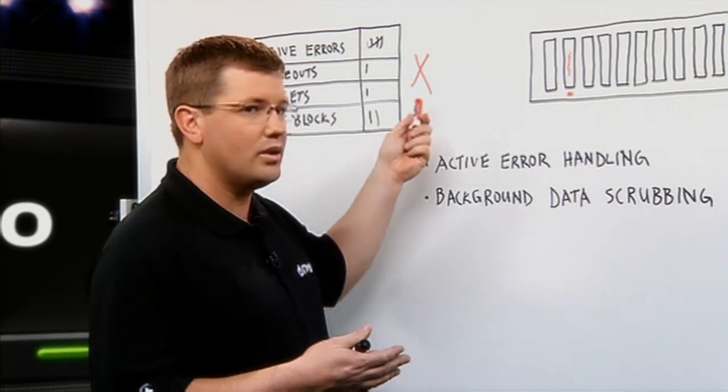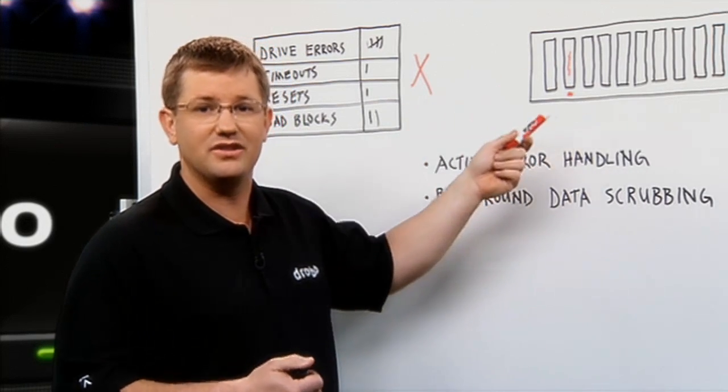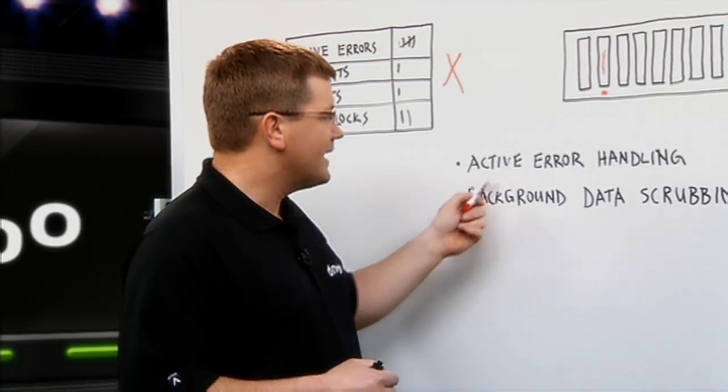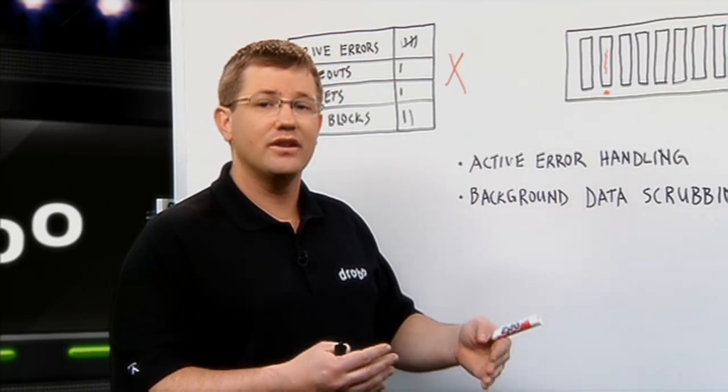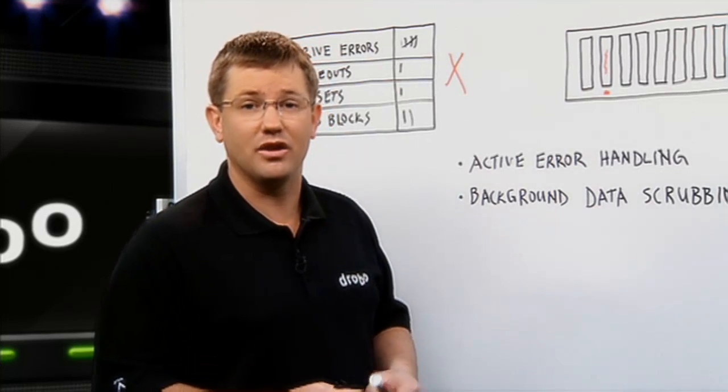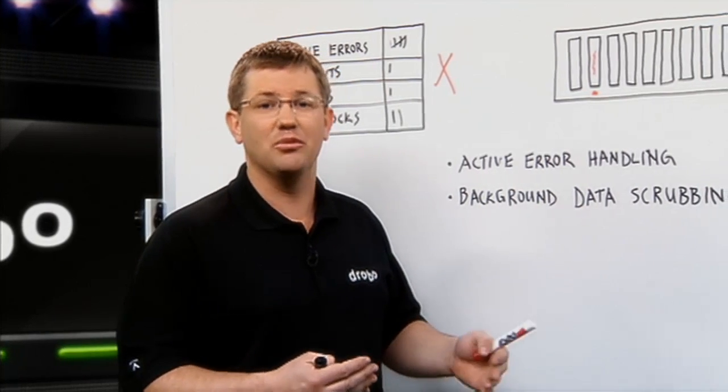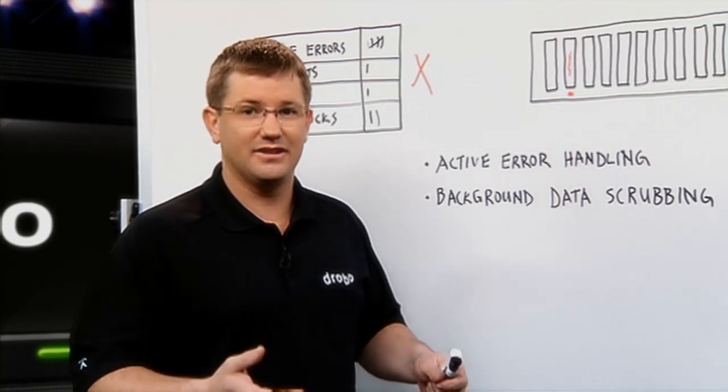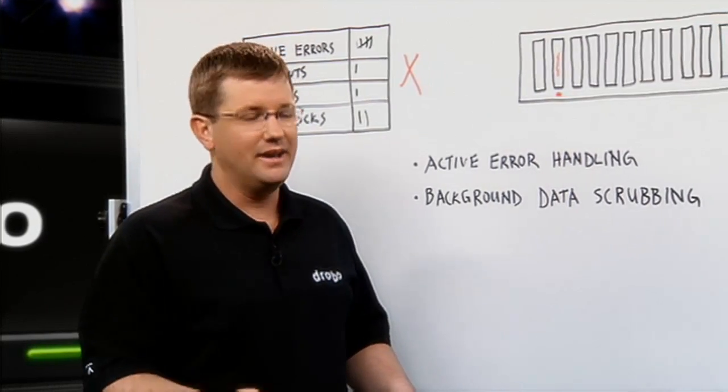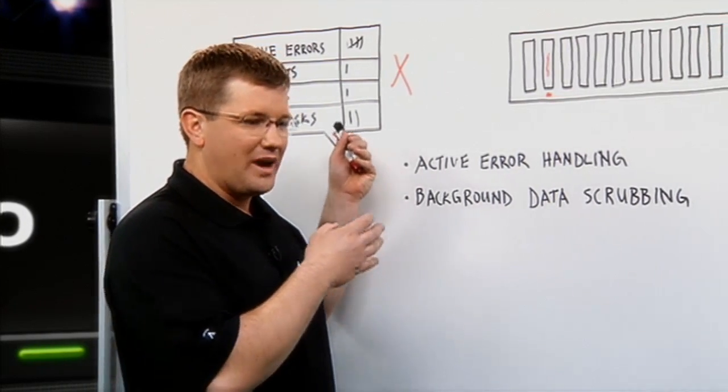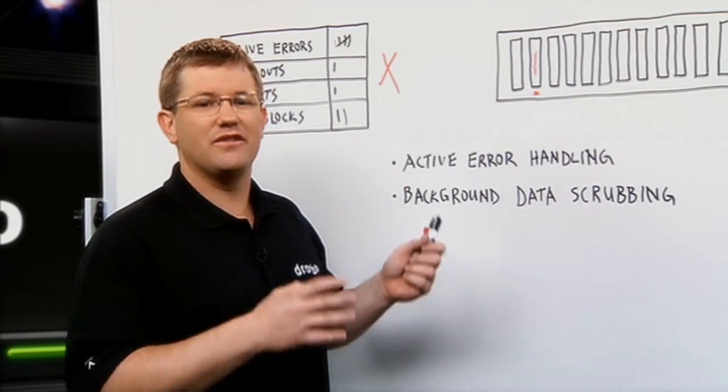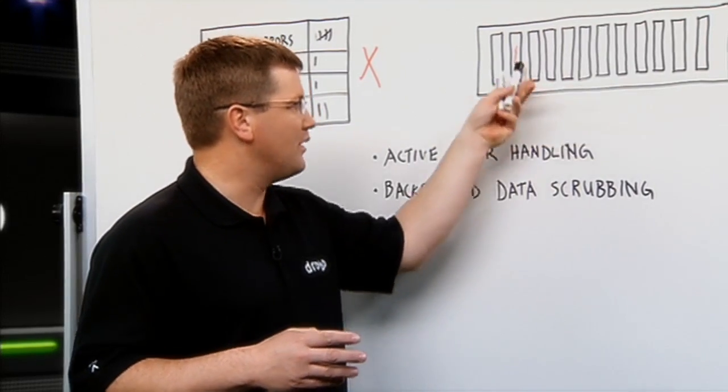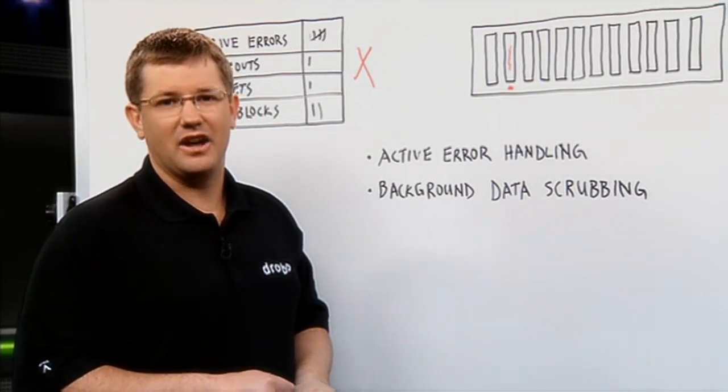The other nice thing that Drobo does is when the system's idle, when the array is not being frequently accessed, being written to or read from, in the background Drobo will go and check areas of the drive that haven't been read in a long time to ensure that that data can still be accessed. If Drobo happens to stumble across an area of a drive that, oh, that data's not there anymore, we can then take its redundant copy and remap it. So when you're actively using the array we're always checking the drives, and even when you're not actively using the array, we're leveraging that free time to go around the array and find challenging areas.